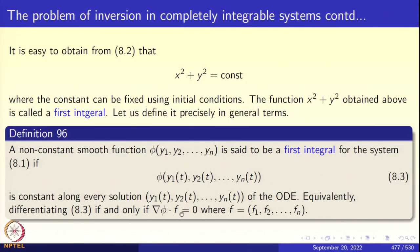Another equivalent way is that the gradient of φ dotted with f equals 0, where f = (f1, f2, ..., fn). Since φ(y1(t), ..., yn(t)) is constant, differentiating with respect to time gives zero on the right-hand side. Differentiating this composite function: ∑(∂φ/∂xj)(dyj/dt) = 0. But dyj/dt = fj, so you get ∑(∂φ/∂xj)fj = 0. That is the last display in this slide.